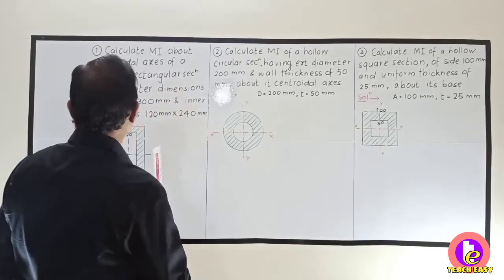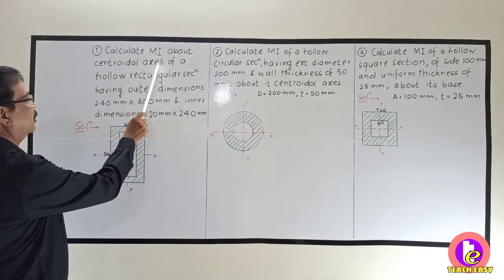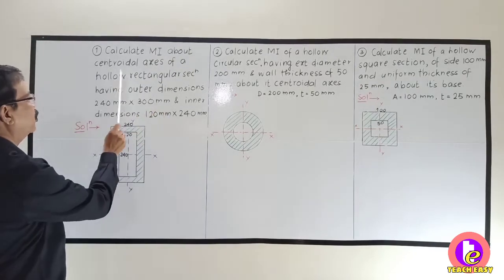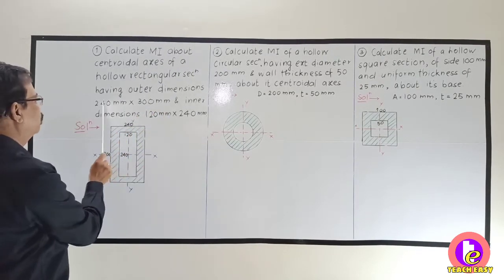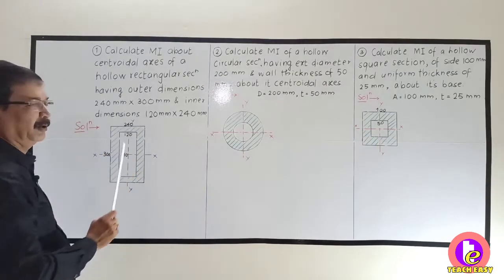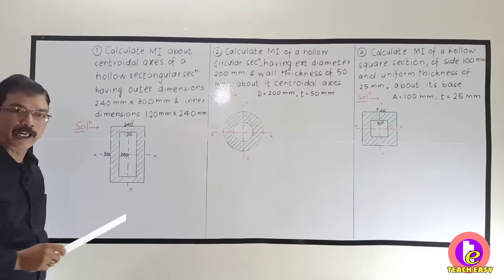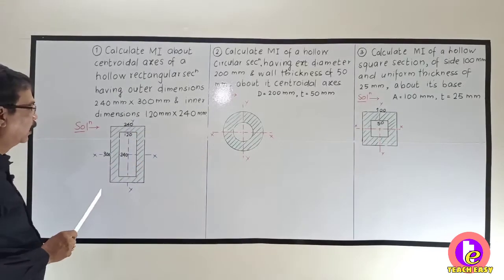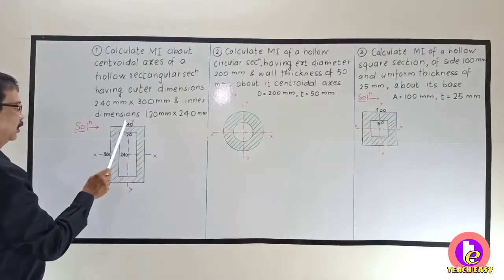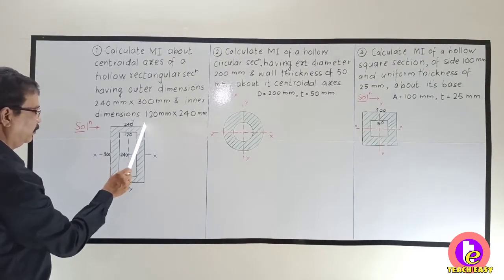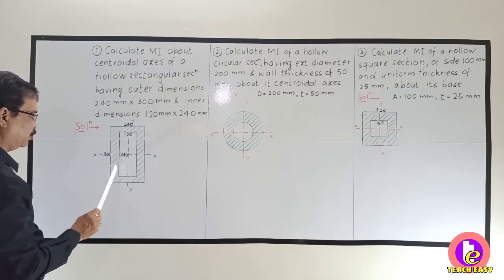The first example: calculate MI about the centroidal axis of a hollow rectangular section having outer dimensions 240 mm by 300 mm and inner dimensions 120 mm by 240 mm. Always keep in mind the bigger dimension is depth. So the outer dimensions are 240 mm width and 300 mm depth, and the inner dimensions are 120 mm width and 240 mm depth.